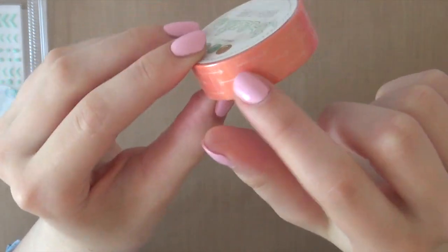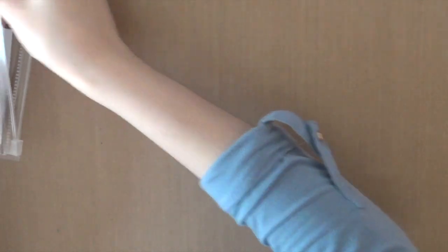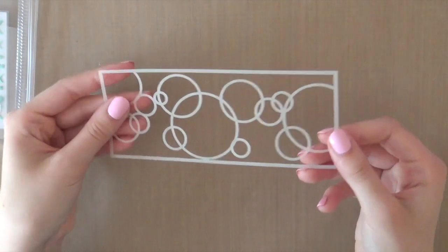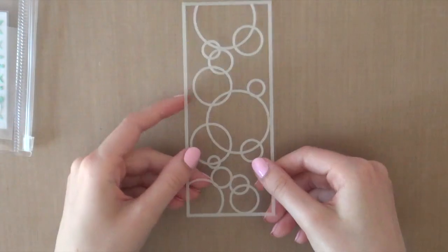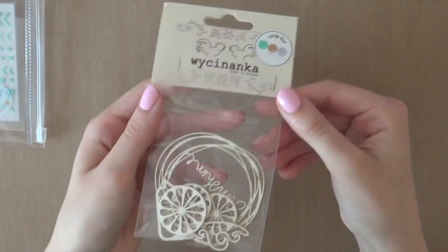Then there's also a roll of washi tape included. This is a coral color and it has some cute arrows on there. The kit also comes with a stencil that is perfect to create a bubble background.